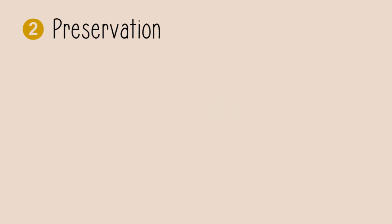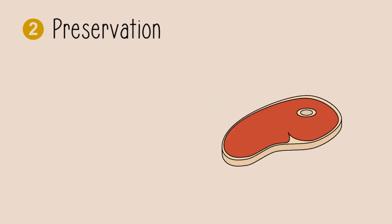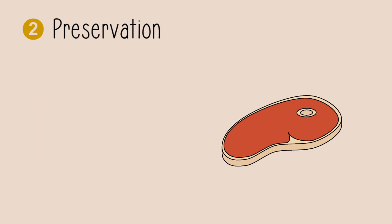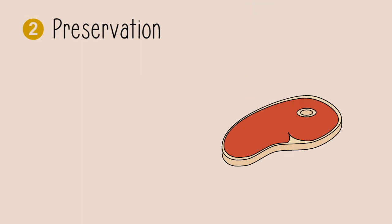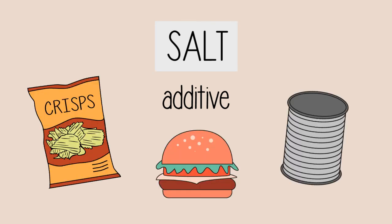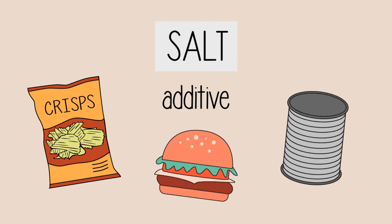These cured and pickled food items usually have a salty, savory taste to them. Usually other preservative agents, such as nitrites, are added, but historically salt is the most common preservative. Salt is also the most common food additive in processed foods. It can be found in rather high quantities in crisps, tinned food, and most fast foods.